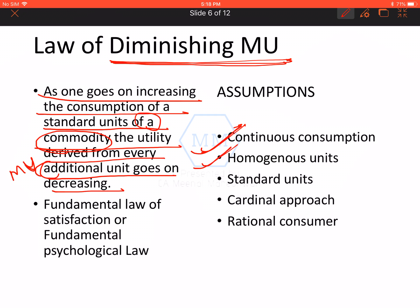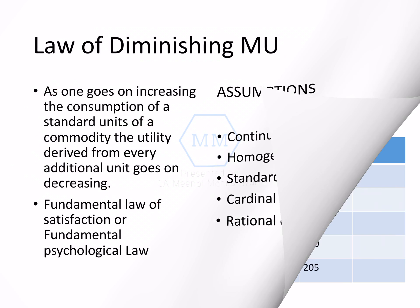There should be no time gap between consuming two units — the consumption should be continuous. Second important condition: units should be homogeneous. If the first glass was water, the second and third should also be water, not orange juice or mango juice. Third important condition: it should be a standard unit — for water, it should be a glass of water, not a spoon of water. It should be a standard quantity. Fourth: this is the cardinal approach. And lastly, we assume a rational consumer who wants to maximize satisfaction. All these assumptions must hold for this law to apply. This law is also known as the Fundamental Law of Satisfaction and the Fundamental Psychological Law.